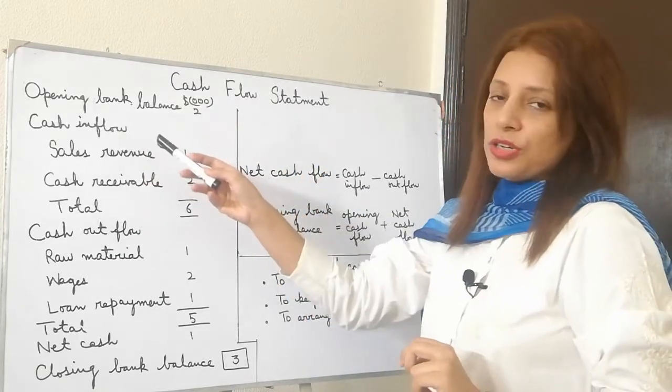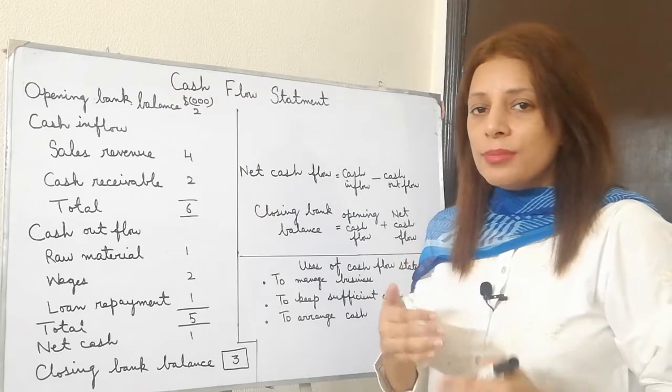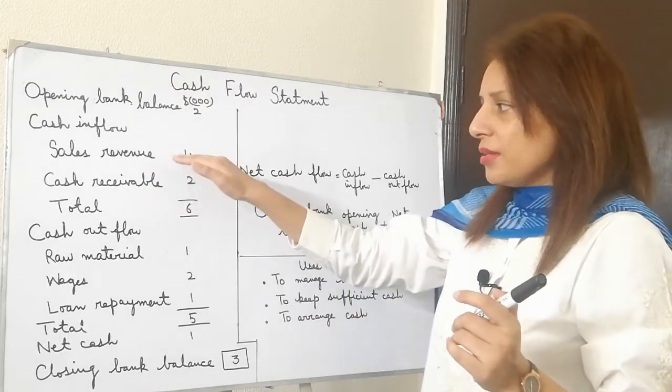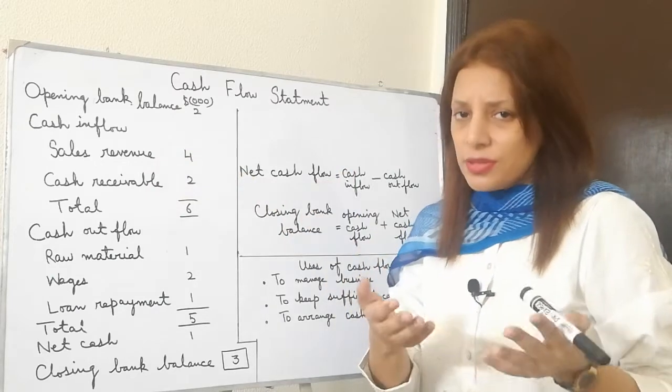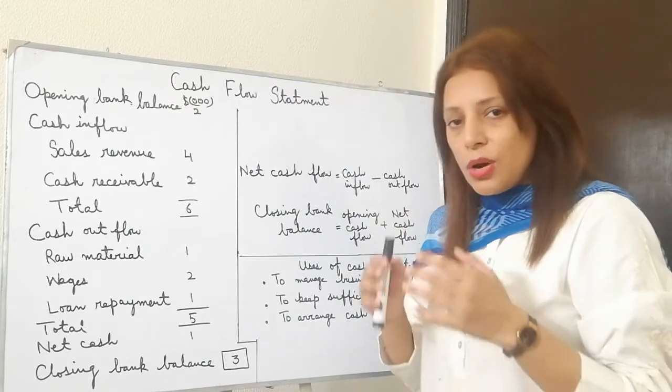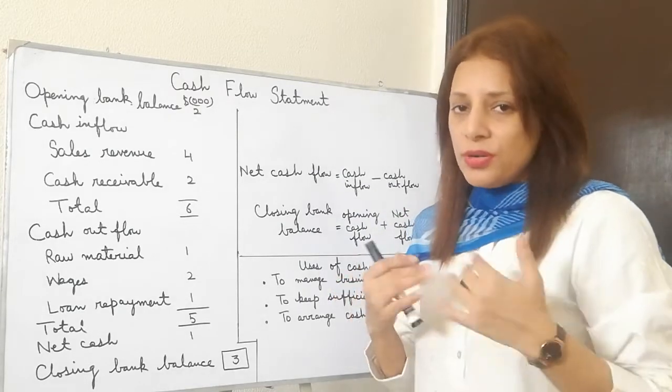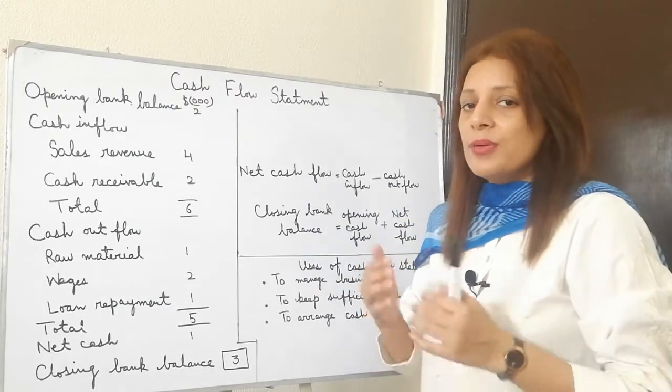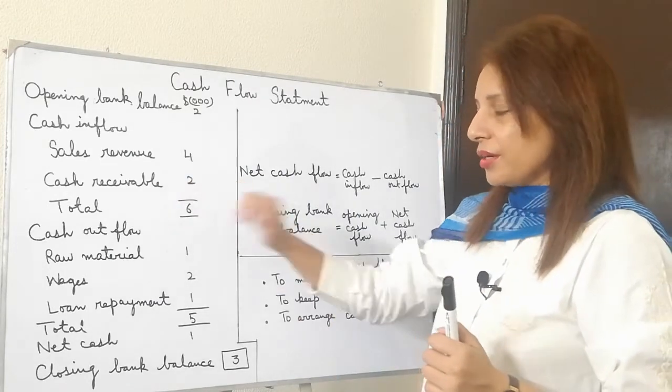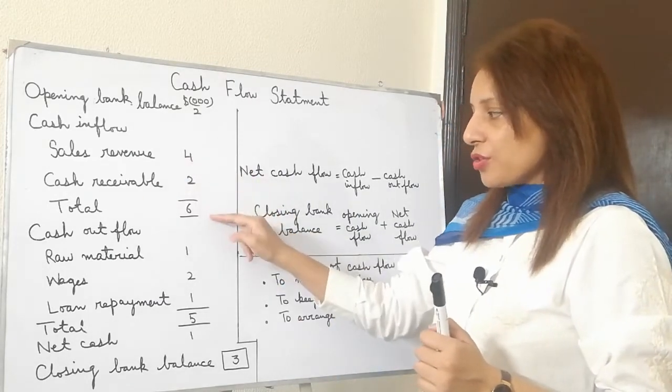Then we have cash inflow, meaning how money comes into the business. For that I have taken two examples. It can be sales revenue, the money you collect after selling your products. It can be cash receivables, we also call them debtors. These are the customers who have bought our goods on credit and will give us money after one month or two months.